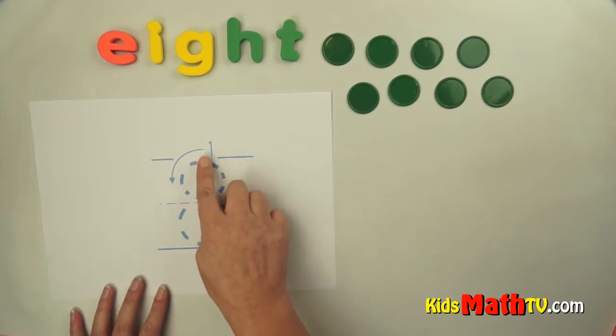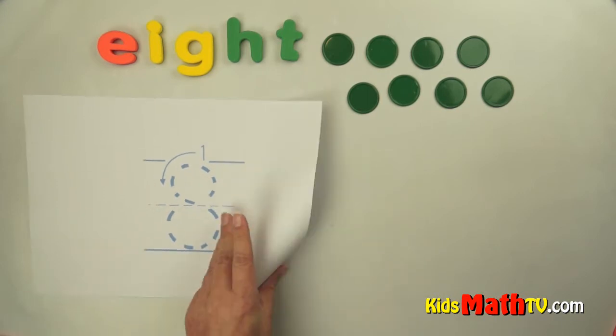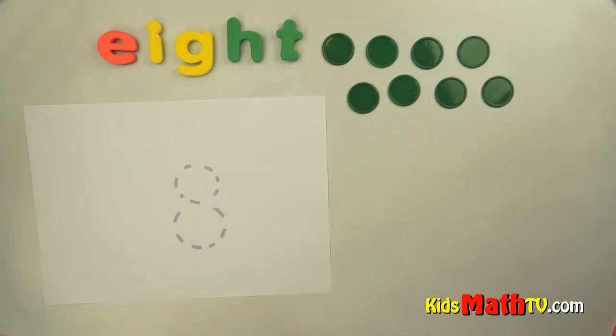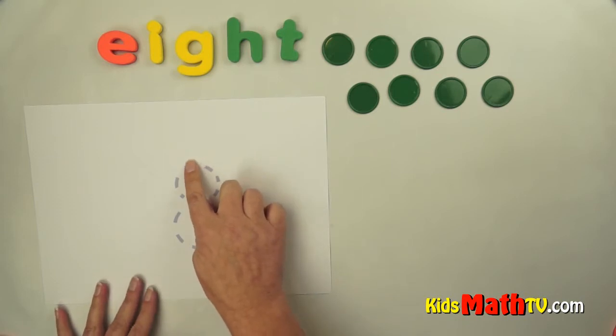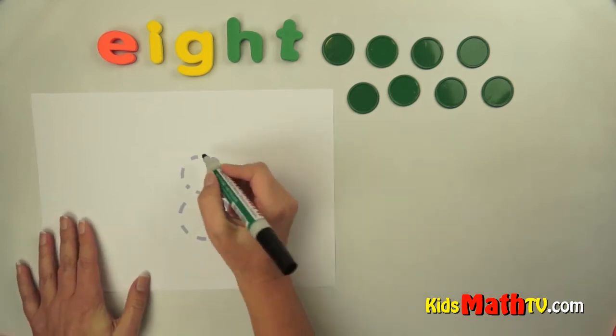It's kind of a fun number to draw. Around, down and around the other way and around and back up to the top. The number eight. Here's the number eight. We start at the top, go around, down and around the other way, around and up and back to the top. So the number eight.